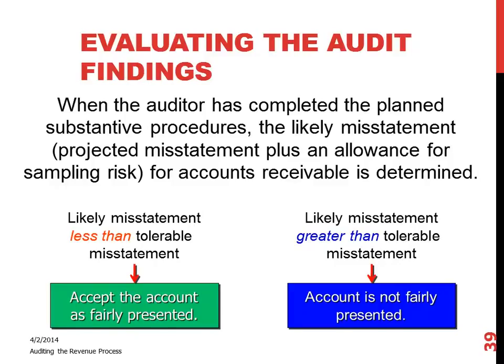That's the difference between a known misstatement and a likely misstatement. Another example of a likely misstatement is if you find a difference between what the client has recorded for the allowance for doubtful accounts and what the auditor calculates it to be. That's a likely misstatement because the allowance for doubtful accounts is an estimate — your best estimate given the evidence you have. If the auditor and the client agree to increase the allowance by, say, $50,000, that is a likely misstatement. Likely errors mostly come from estimates and from sampling.